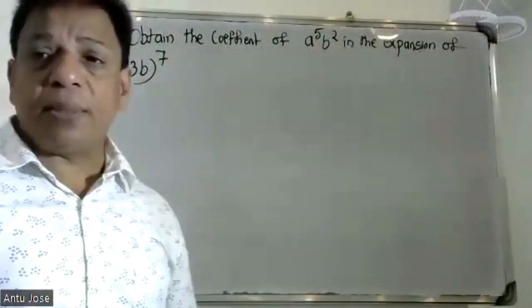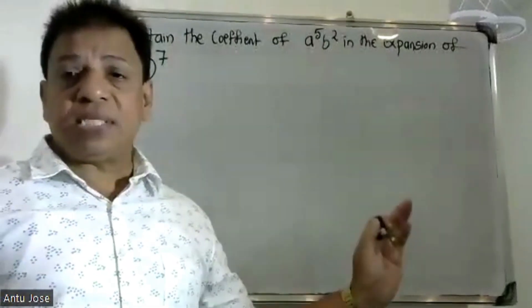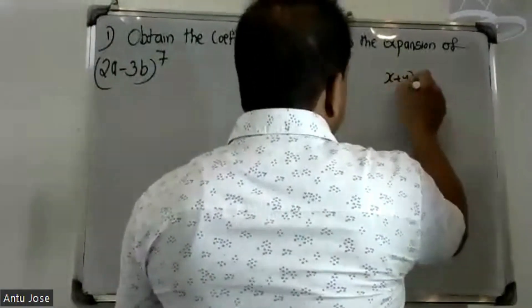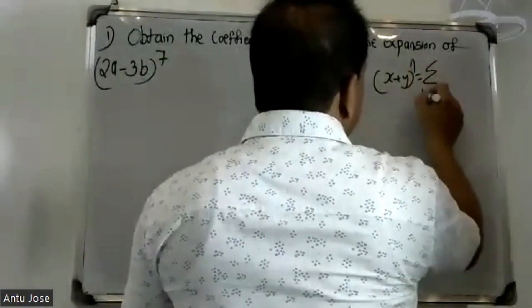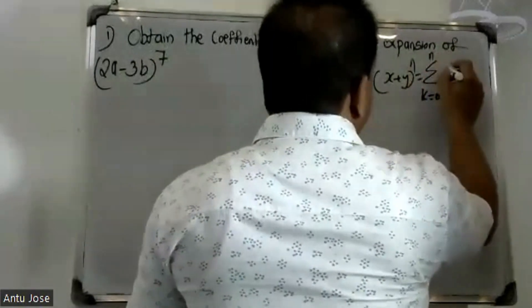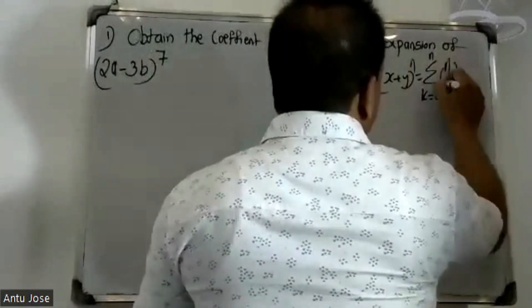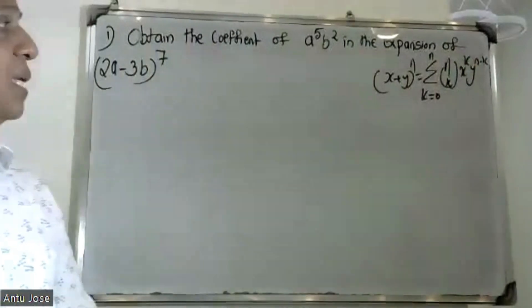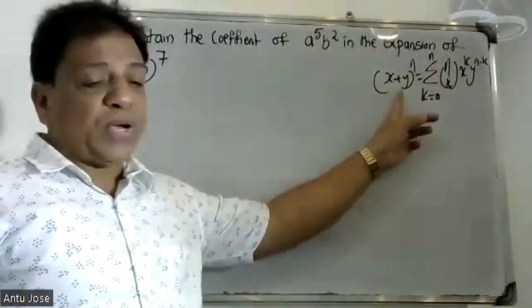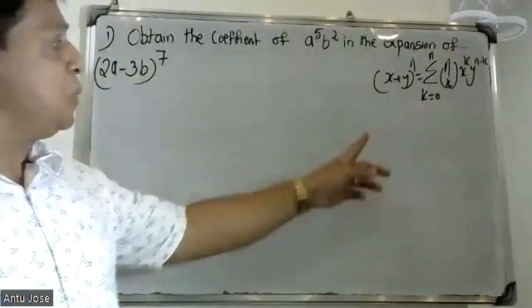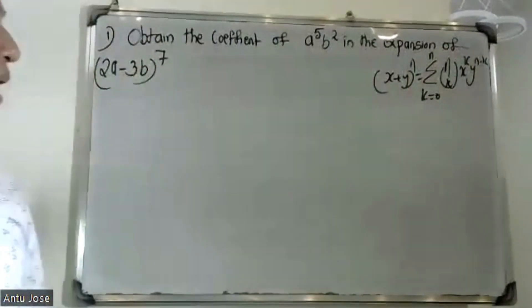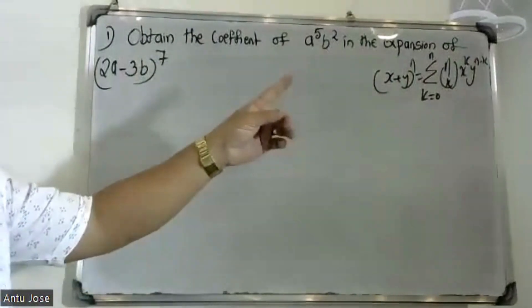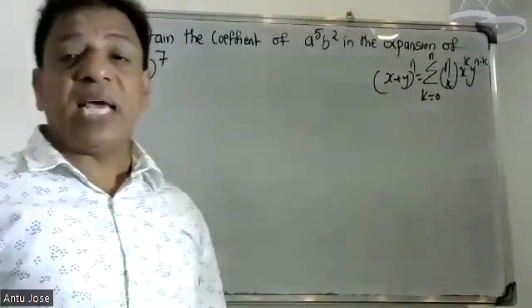If x and y are two variables and n is a positive integer, then x plus y raised to n is equal to sigma k equals 0 to n, nCk, x raised to k, y raised to n minus k. That is the general binomial expansion formula, where nCk is the binomial coefficient.